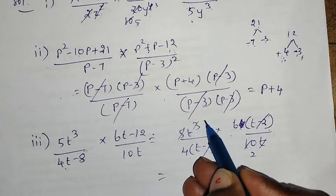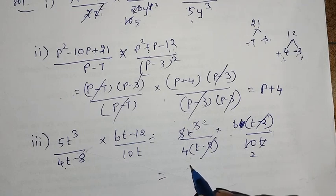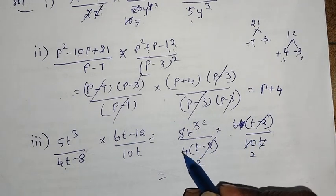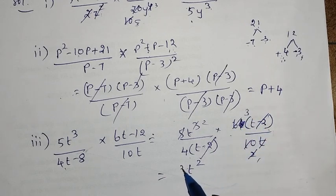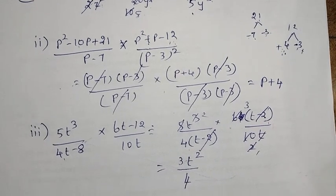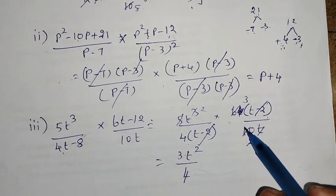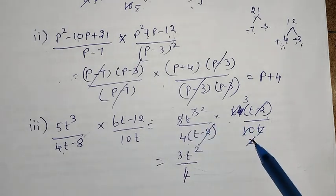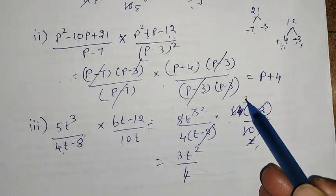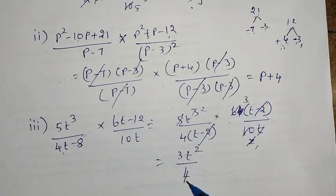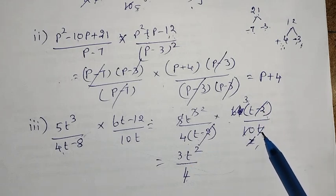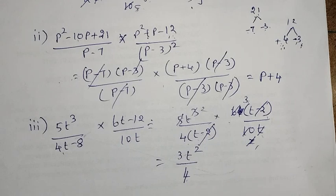T minus 2 cancels. 1, 5, 2s are 10. T cancels to T square. 1, 2s are 2, 3, 2s are 6. 3T square divided by 4.